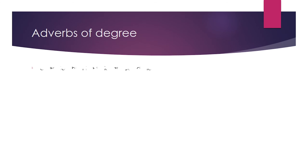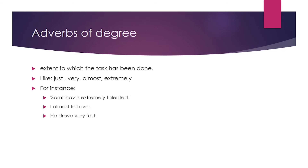Adverb of degree tells us the extent to which a task has been done. For example: just, very, almost, extremely. Sambo is extremely talented — no doubt Sambo is talented, but using the adverb of degree extremely describes it more beautifully. I almost fell over. He drove very fast.